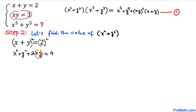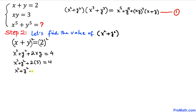Since xy equals 3, we substitute to get x square plus y square plus 2 times 3 equals 4, which simplifies to x square plus y square plus 6 equals 4. Subtracting 6 from both sides, x square plus y square turns out to be negative 2.